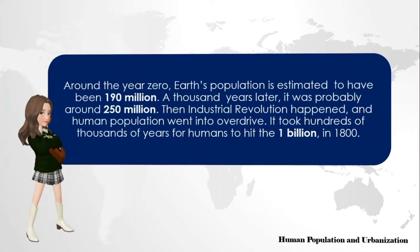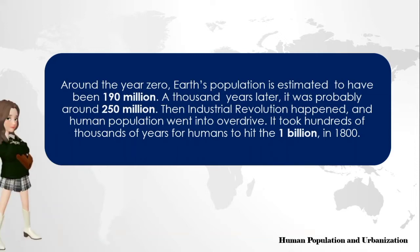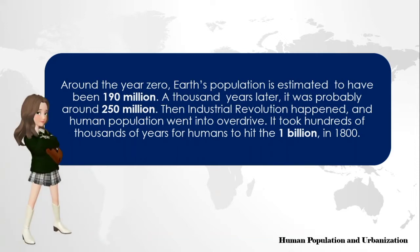According to research, around the year zero, Earth's population was estimated to have been 192 million. A thousand years later, it was probably around 250 million. The industrial revolution happened and human population went into overdrive. It took hundreds of thousands of years for humans to hit the 1 billion mark.